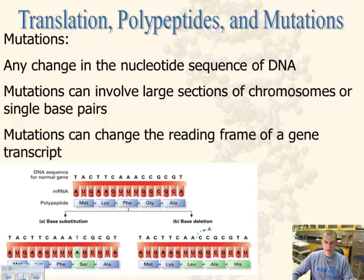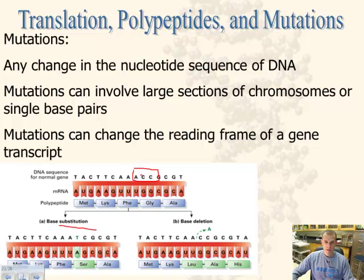In this example, the top shows the normal gene or normal DNA sequence, and here's our messenger RNA being coded for. You have the triplets — AUG is our start codon, codes for methionine, and so on to get our amino acids. One type of mutation is called substitution — the letters substitute for another letter. Looking at this sequence, the letter C has been substituted by the letter T, so instead of coding for G in the messenger RNA, it codes for an A. This actually changes the amino acid in the sequence.